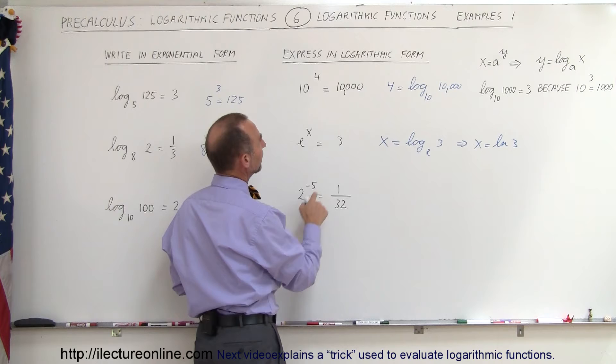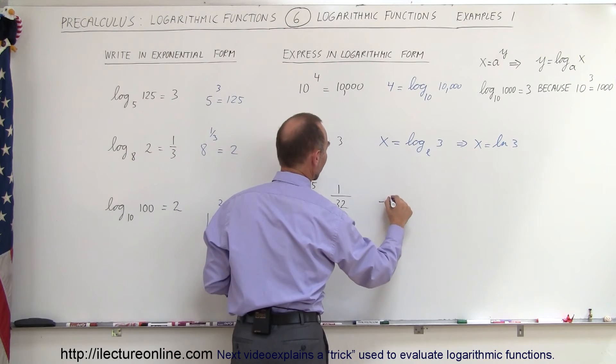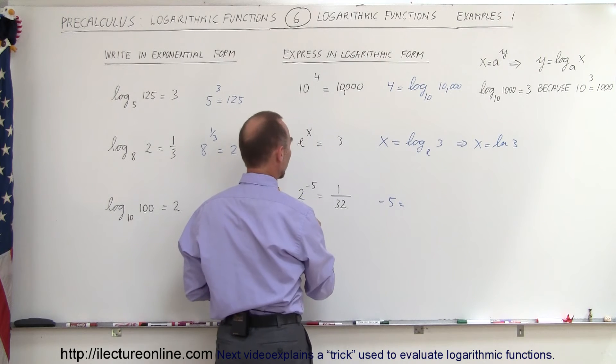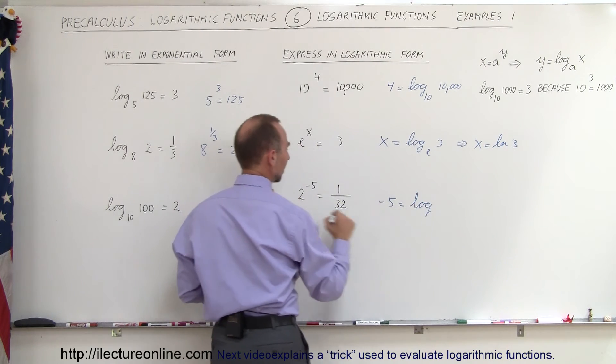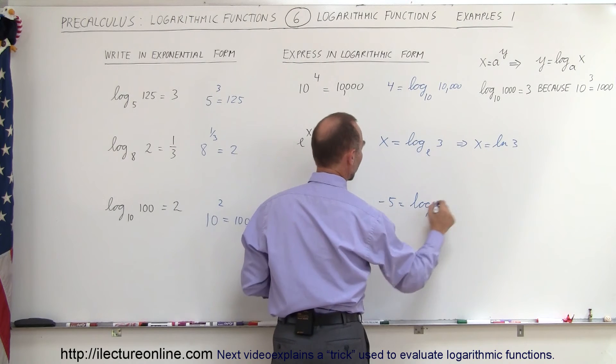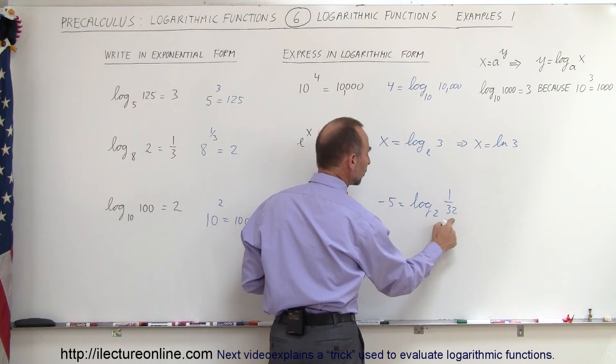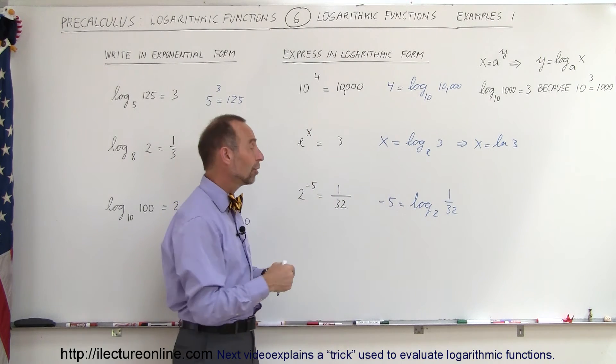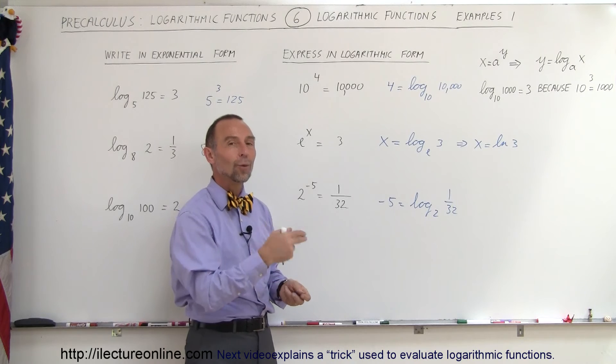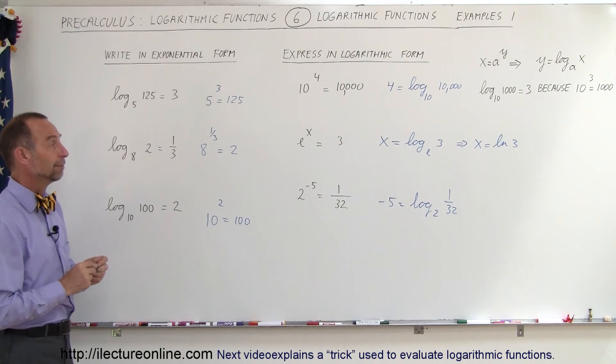Over here again we take the exponent that becomes the number on the side, so minus 5 equals the log of the base of the number 1 over 32. So the log base 2 of 1 over 32 is minus 5 because 2 raised to the fifth power gives me 1 over 32, and so that's how we can convert from one to the other in a straightforward manner.